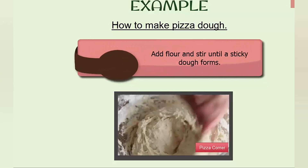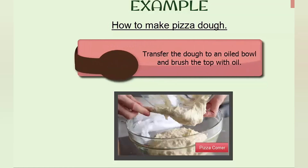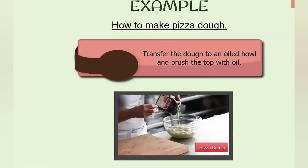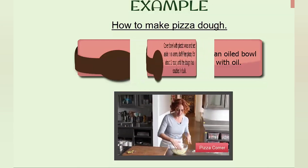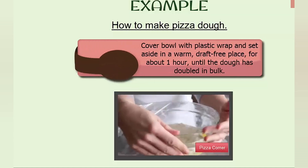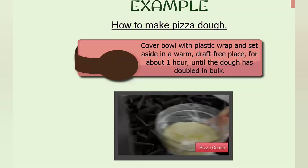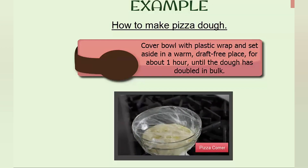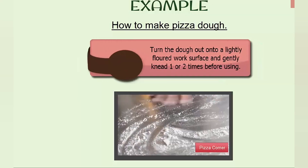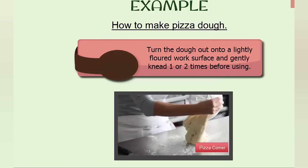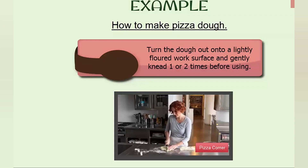Add flour and stir until a sticky dough forms. Transfer the dough to an oiled bowl and brush the top with oil. Cover the bowl with plastic wrap and set aside in a warm, draft-free place for about one hour until the dough has doubled in bulk. Turn the dough out onto a lightly floured work surface and gently knead it one or two times before using.